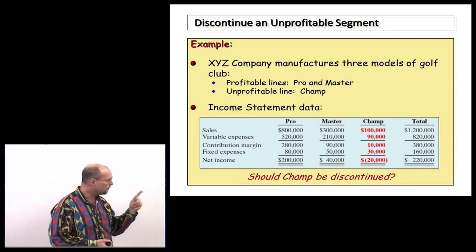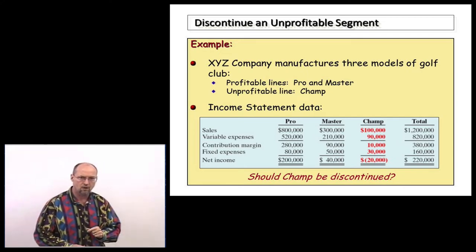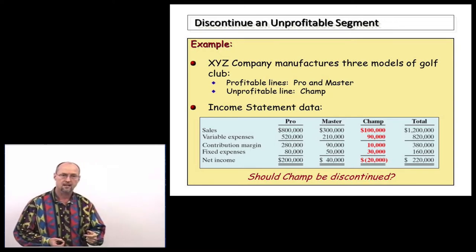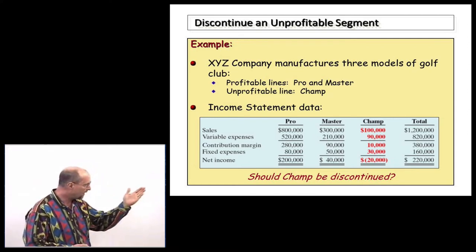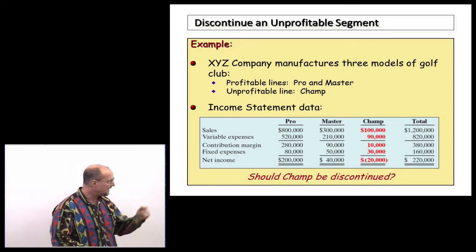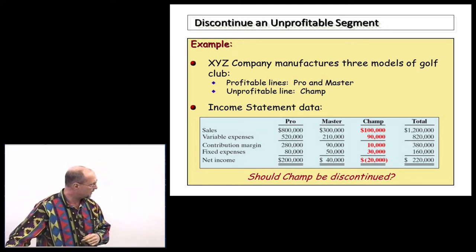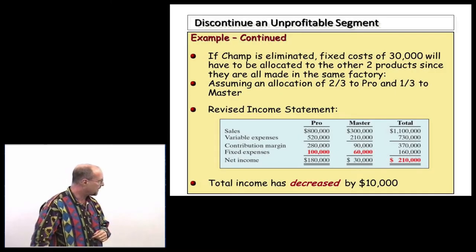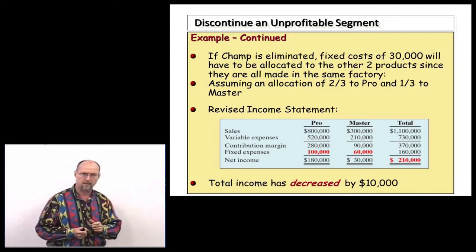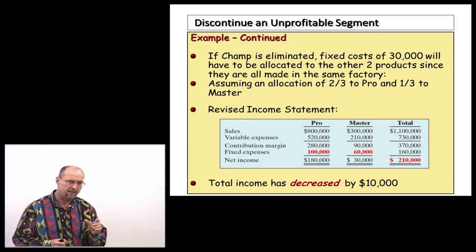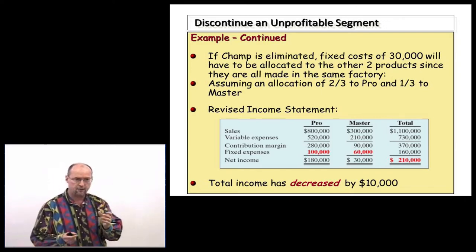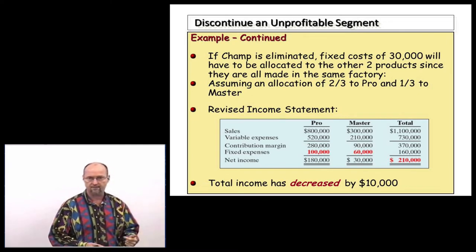If we discontinue the Champ line, revenues go away and variable costs go away. However, the fixed costs in our example are not going away. We were contributing $10,000 toward covering those fixed costs, so that contribution margin disappears and our income will drop by $10,000 in total. Even with that $20,000 loss, we're making net income of $220,000. If we discontinue the Champ line, notice our income drops by $10,000. The key question is: will fixed costs be eliminated — all, some, or none?